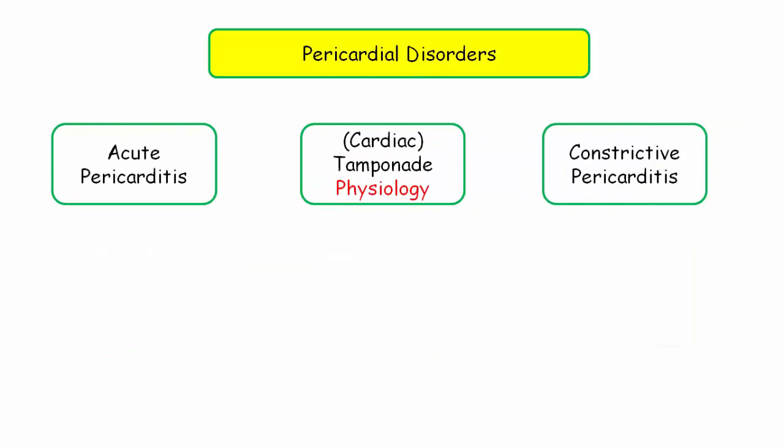So here are the key disorders: acute pericarditis, cardiac tamponade, and constrictive pericarditis. I want to cut to the chase straight away with necessary background information that will make it easy for you to sort out these conditions. So let's start with acute pericarditis.